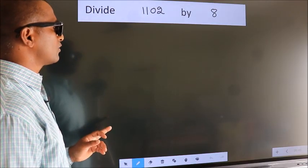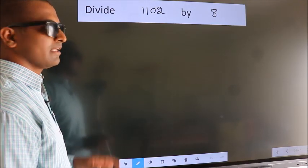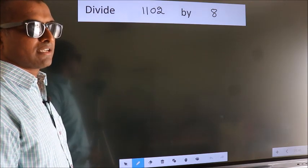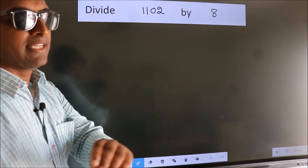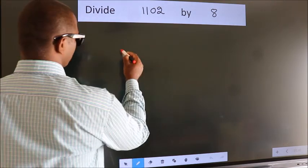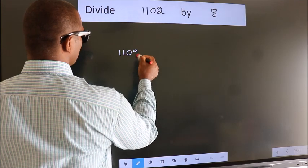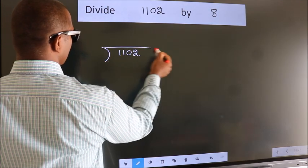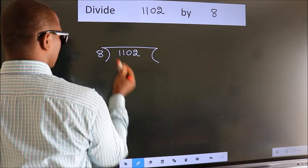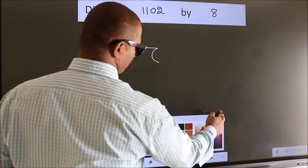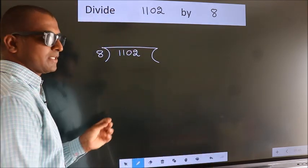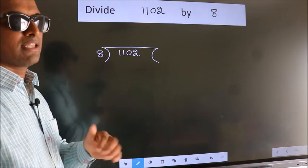Divide 1102 by 8. To do this division we should frame it in this way. 1102 here, 8 here. This is your step 1. Next.